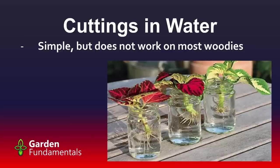A lot of beginning gardeners like to root things in water, and that works really well for some houseplants — like coleus — which root pretty easily in water. It's nice because you can see what's going on with the root system and you can do it easily at home with just an old jar. The problem is that the plant develops a different kind of root in water than it does in soil. So when you move the rooted cutting from water to soil, it's generally set back quite a bit and has to grow new roots. In many cases, it's better to start them in soil right away. The water technique also doesn't work for most woody plants — trees and shrubs don't root well in water.